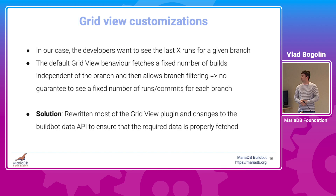One of the most requested features from developers was the ability to see the last X runs of a given branch in the GridView. However, the default GridView behavior fetches the last builds independent of branch and then allows branch filtering only for those builds. Even though X is configurable, this means there is no guarantee that a fixed number of builds will be shown for the desired branch if other branches had many recent pushes. To solve this, we rewrote most parts of the GridView plugin and made changes to the Data API to ensure the required data is properly fetched.